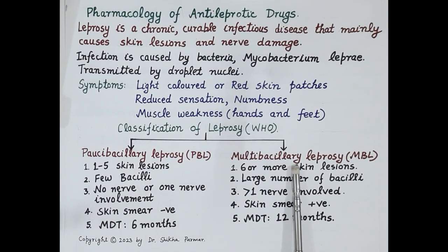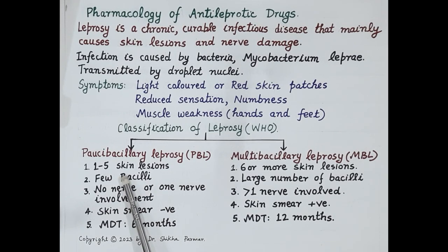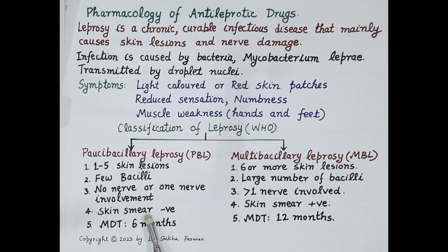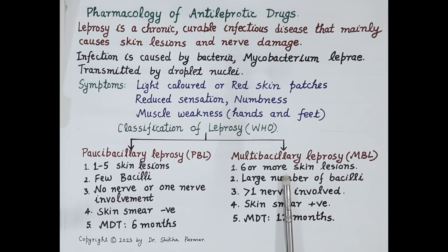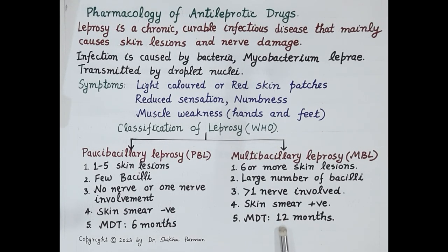WHO classifies leprosy as paucibacillary leprosy and multibacillary leprosy. Paucibacillary leprosy is characterized by one to five skin lesions; the patient has few bacilli, either no nerve or only one nerve is affected, and skin smear is negative. Leprosy cannot be treated by a single drug, so multi-drug therapy is given for six months for paucibacillary leprosy. In multibacillary leprosy, six or more skin lesions are seen, the patient has a large number of bacilli, more than one nerve is affected, skin smear is positive, and multi-drug therapy is given for 12 months.